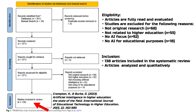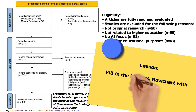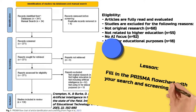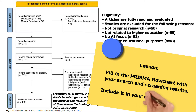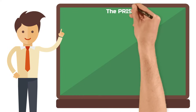These articles were analyzed in detail and qualitatively coded to answer the study's research question. You just need to fill out the PRISMA flowchart with the results of your literature search and screening and you can include it in the methods section of your paper as a figure. Super easy, right?